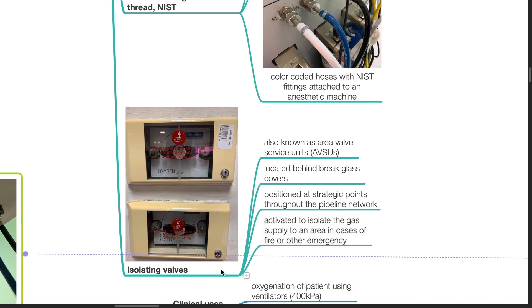Isolating valves, also known as aerial valve service units or AVSU, are located behind brick glass covers. They are positioned at strategic points throughout the pipeline network. These are activated to isolate the gas supply to an area in cases of fire or other emergencies.